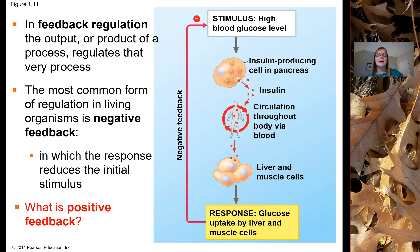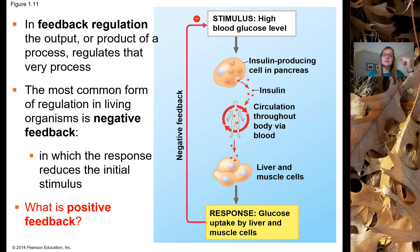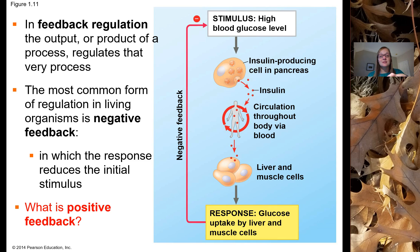Another example of positive feedback happens during childbirth. A hormone called oxytocin is produced by the brain, and oxytocin causes the uterus to contract. When the uterus contracts, it starts to push the baby's head against the cervix. When the baby's head pushes up against the cervix, the cervix sends a signal to the brain saying we need more oxytocin. The brain produces more oxytocin, which signals the uterus to contract even more, pushing the baby's head further against the cervix, which sends the message for even more oxytocin — a positive feedback loop that continues until, of course, the baby is born.